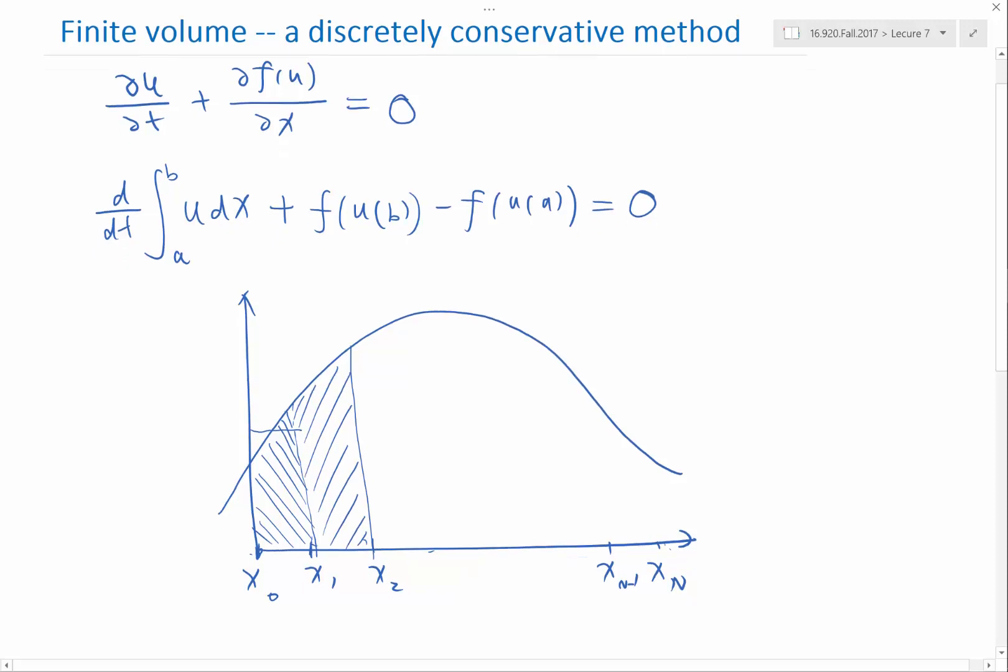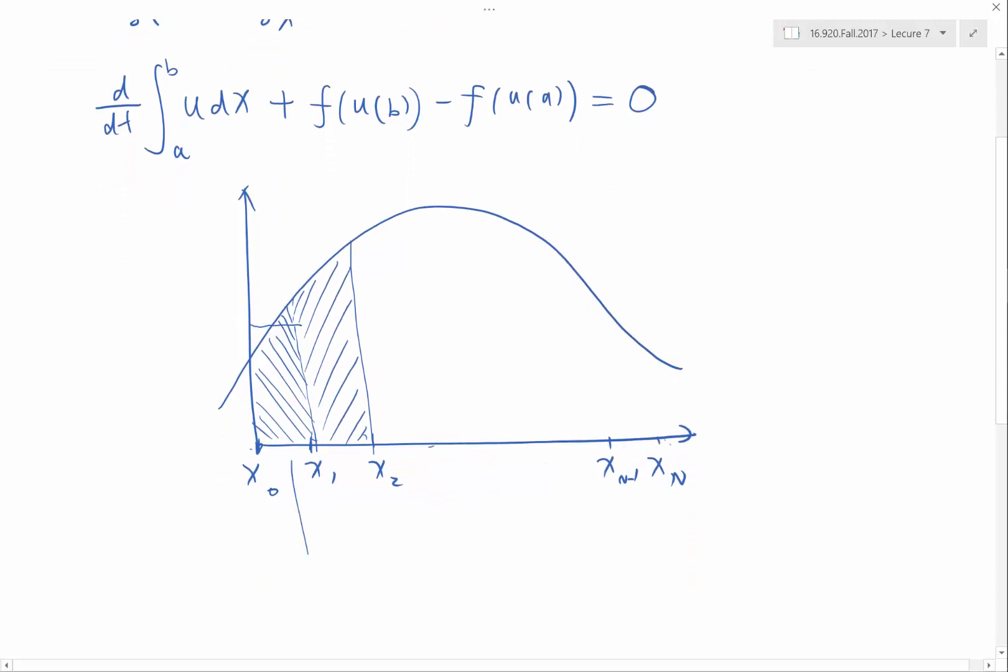The area below each interval is going to be my u1 times delta x, the area under the second interval is going to be my u2 times delta x, and over the last interval is going to be un times delta x.